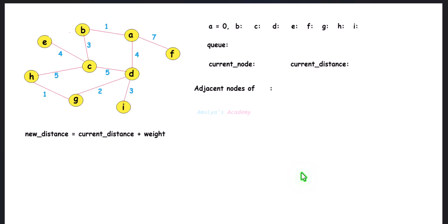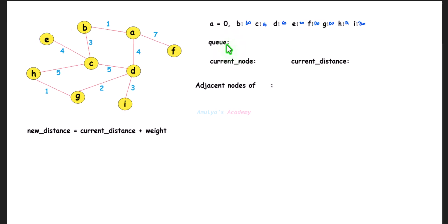Let's take an example graph and see how Dijkstra's algorithm finds the shortest distance from a source node to all other nodes. We take A as the source node. The first step is to assign distances: distance of A is 0 since it is the source node, and for all other nodes take distance as infinity. Then create a priority queue and add the starting node A with distance 0 to the queue.